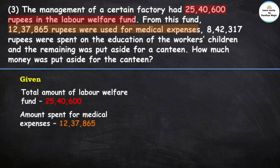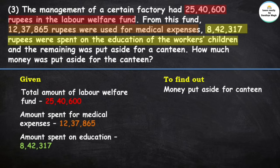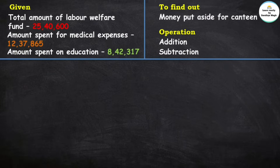We need to find how much money was put aside for the canteen. To find the answer, we first add the medical expenses and education expenses, then subtract that total from the labor welfare fund. Let's do addition of the amount spent for medical expenses and the amount spent on education.